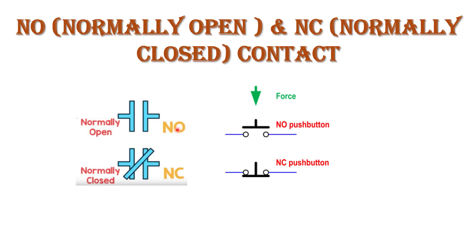In ladder logic diagram, inputs use push buttons, limit switches, etc. If a push button is open, this is called a normally open contact — there is no connection between input and output, so no current flows. In a normally closed contact, the push button is off, meaning there is a connection between input and output, so current flows. We convert NO to NC contact by applying a force — by pushing the push button.